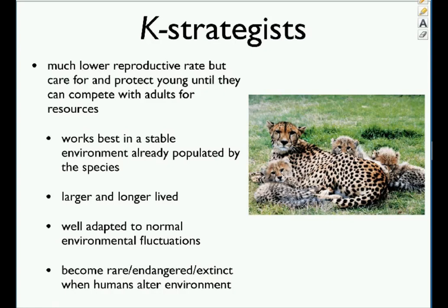K-strategists — technically what humans are — have a low reproductive rate but protect their young until they can compete with adults for resources. Many large charismatic megafauna are K-strategists, and endangered species are often K-strategists because they take a long time to reproduce, are large and easily hunted, and are old when they have babies. They work best in a stable environment and are rarely invasive species, but anything beyond normal environmental fluctuation — like climate change — causes them serious issues.